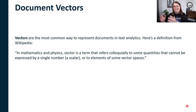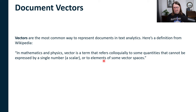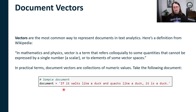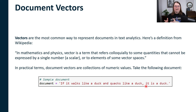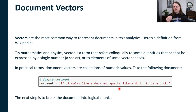Let's get started by talking about document vectors. The first thing we need to discuss is something called a document vector — the most common way that textual data is represented so that the computer can actually perform analytics on it. Using an example: here is a textual document — a single sentence: 'If it walks like a duck and quacks like a duck, it is a duck.' The process of breaking up raw textual data into logical chunks is known as tokenization.